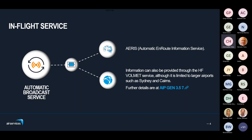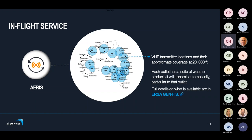For the automatic broadcast service, there's the AEROS — Automatic On-Route Information Service. Additionally for those with HF there is the VOLMET service, limited to larger airports such as Sydney and Cairns; full details are in the AIP. The AEROS map shows blue circles indicating transmitter coverage at approximately 20,000 feet; the oblongs are transmitter locations and the squares indicate where you can get a product. Each outlet has a different suite of products — out near Meekatharra in Western Australia you won't get the TAF for Sydney but you will get TAFs for Carnarvon and Perth. More information in the ERSA on what each outlet offers.